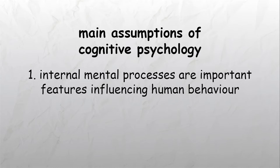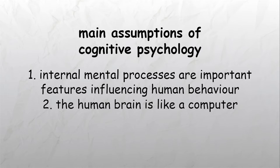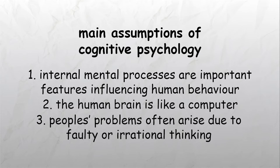Second, the human brain is like a computer — it receives, interprets, and responds to information. Third, people's problems often arise due to faulty or irrational thinking, which can be traced and often remedied using cognitive therapy.